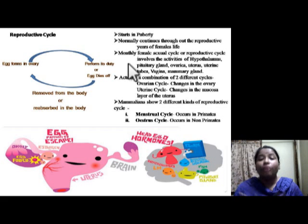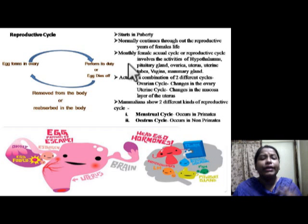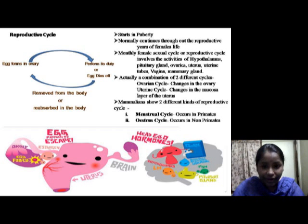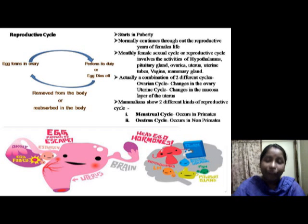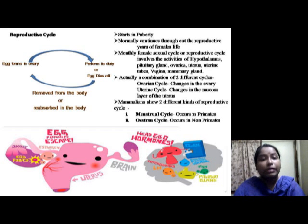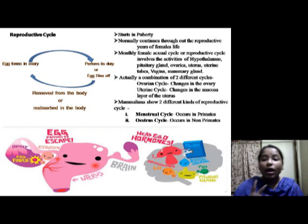Then again the body forms an egg and repeats the previous actions. This process goes on repeatedly in the female body. To know the reproductive cycle properly, we must know the female reproductive system. The ovaries are present in the reproductive system where the oocyte develops and becomes a mature ovarian follicle, and the mature ovum travels through the fallopian tube to the uterus, cervix, and vagina.